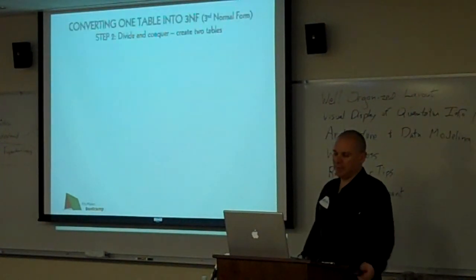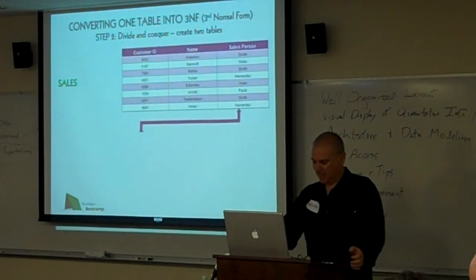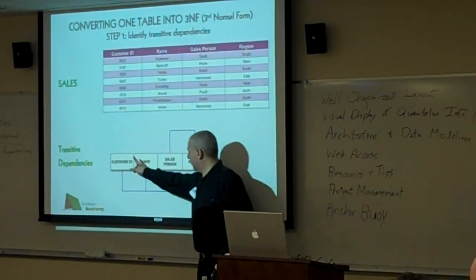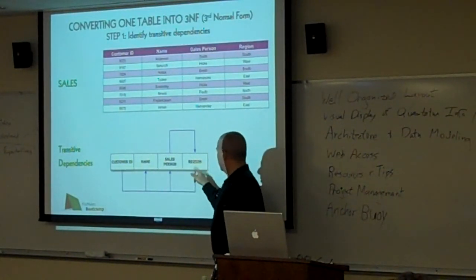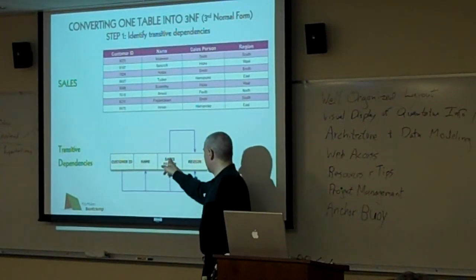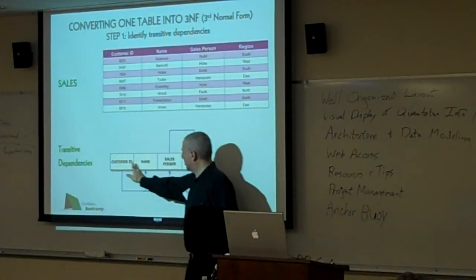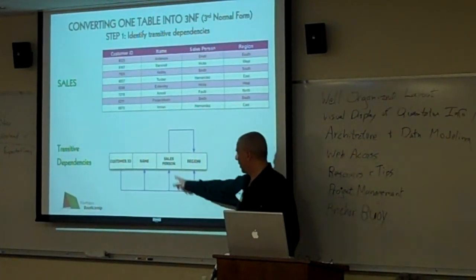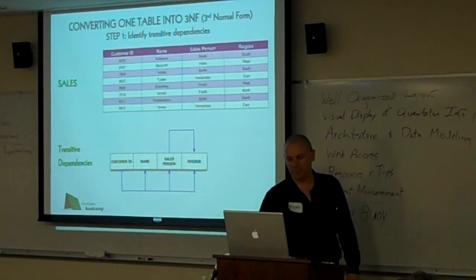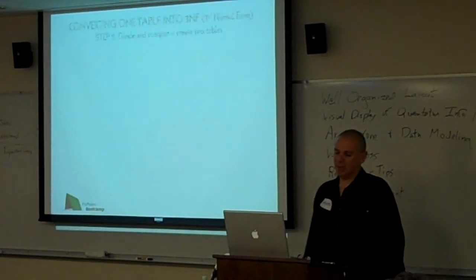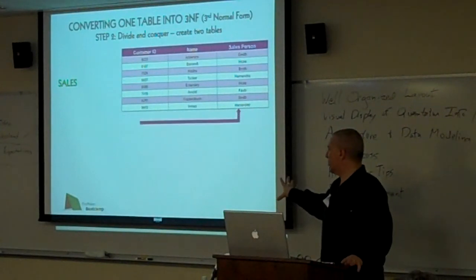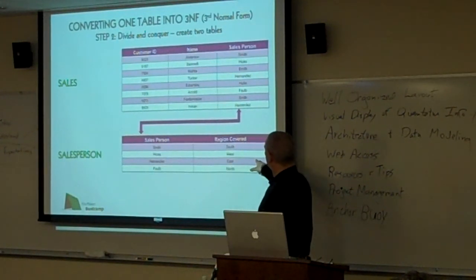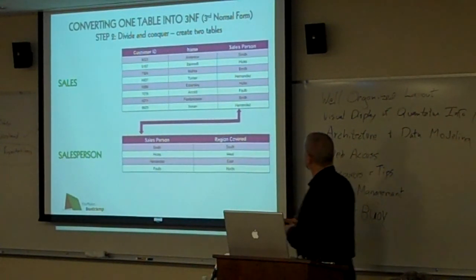The way you resolve this — remember the direction of the functional dependency lines. You take the customer-related fields and stop there as a unique set. Then you separate out the salesperson-to-region relationship into another table, because the salesperson tells you what the region is. When the tables are split out, you end up with a table of salespeople and a table of sales information.